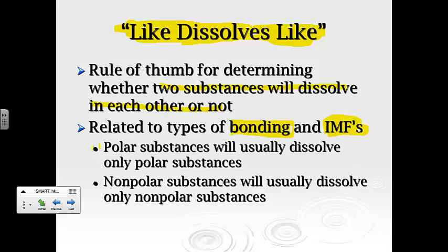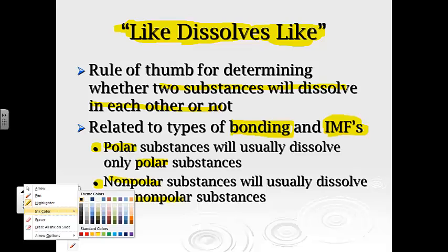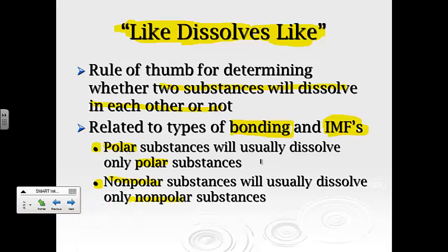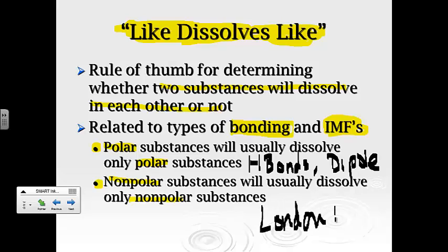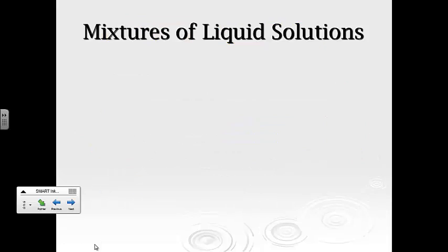But the majority of it is that polar substances will usually dissolve polar substances, and nonpolar substances will usually dissolve nonpolar substances. And that's because similar intermolecular forces, they can actually react. Remember, polar substances, you're either dealing with hydrogen bonds or dipole forces, whereas nonpolar substances, you're dealing with London dispersion. So if they have similar forces, they can intermingle. If not, they're not going to intermingle.